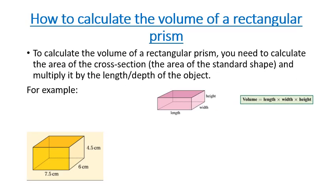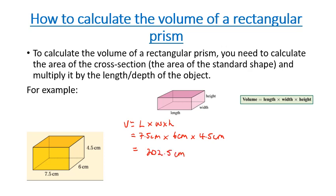First up, we're going to calculate the volume of a rectangular prism. This is probably the easiest one — it's the length times the width times the height. As an example with the yellow prism, our length is 7.5 centimetres, our width is 6 centimetres, and our height is 4.5 centimetres. Putting that into a calculator gives us 202.5 centimetres cubed.